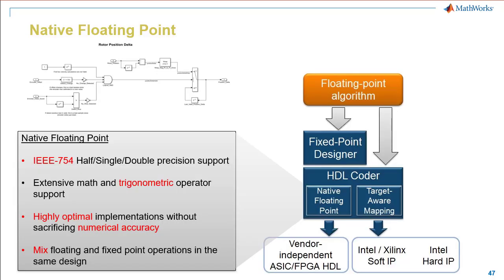To generate hardware-efficient HDL code from Simulink, we require the data types to be fixed point. Fixed point data types are used in order to reduce power consumption and hardware resource usage. For initial prototyping and validation of control algorithm design, we can use floating point data type and generate HDL code. HDL Coder can generate HDL from native floating point data type. This capability was awarded the Embedded Award in 2017 for its ability to generate optimal code without sacrificing numerical accuracy.